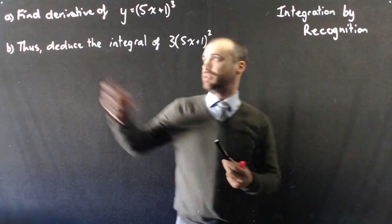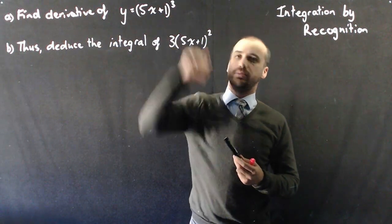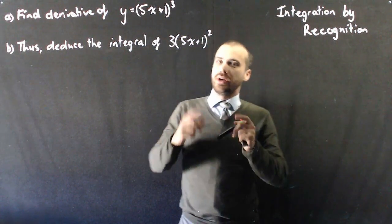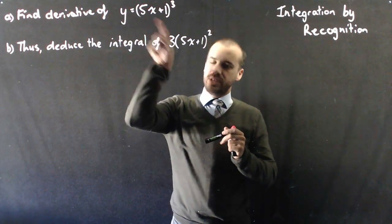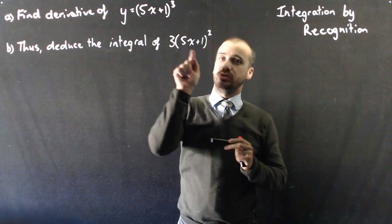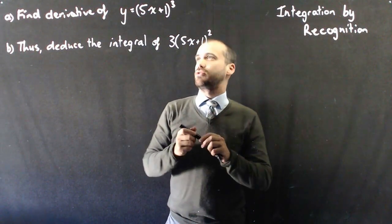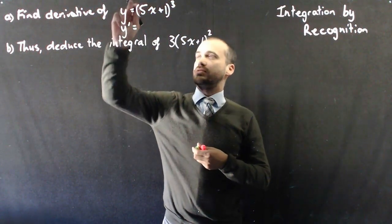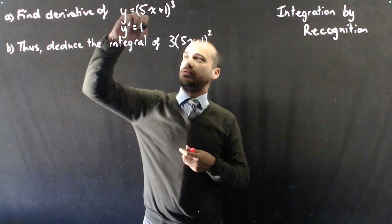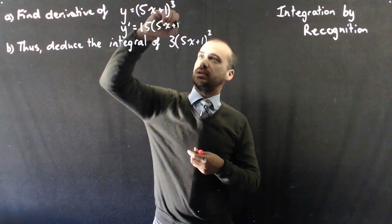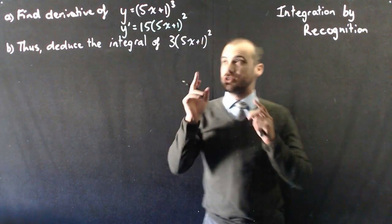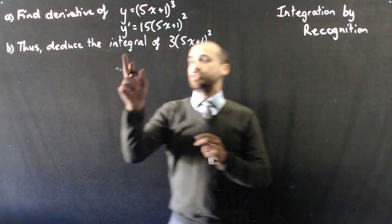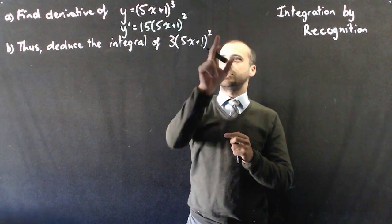Here's the sort of question I'm talking about. Find the derivative of y equals (5x + 1) to the power of 3. Then deduce the integral of 3(5x + 1) squared. So being able to find the derivative should help us find the integral. y' equals — bring the 3 out, bring the 5 out — it'll be 15(5x + 1) squared. Now we're supposed to use that to deduce the integral of 3(5x + 1) squared.